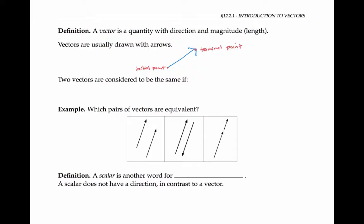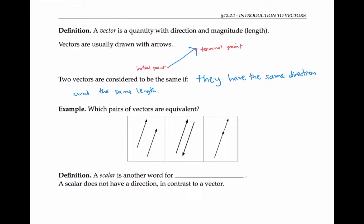Two vectors are considered to be the same if they have the same direction and the same length. The position of the vector — that is, where it's drawn on the plane or in space — doesn't matter. The first two vectors are equivalent, because they have the same direction and the same length, even though they start and end at different points.